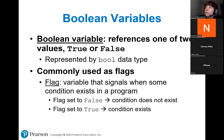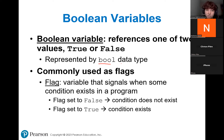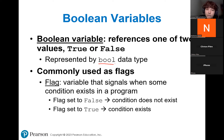Boolean variables are also available in Python — they're represented by the bool data type. However, remember that in Python you do not need to specify data types. Your compiler automatically understands what you're doing, unlike Java where you must explicitly put the data type of each variable. This is just for your knowledge that Boolean variables are represented by bool in Python.